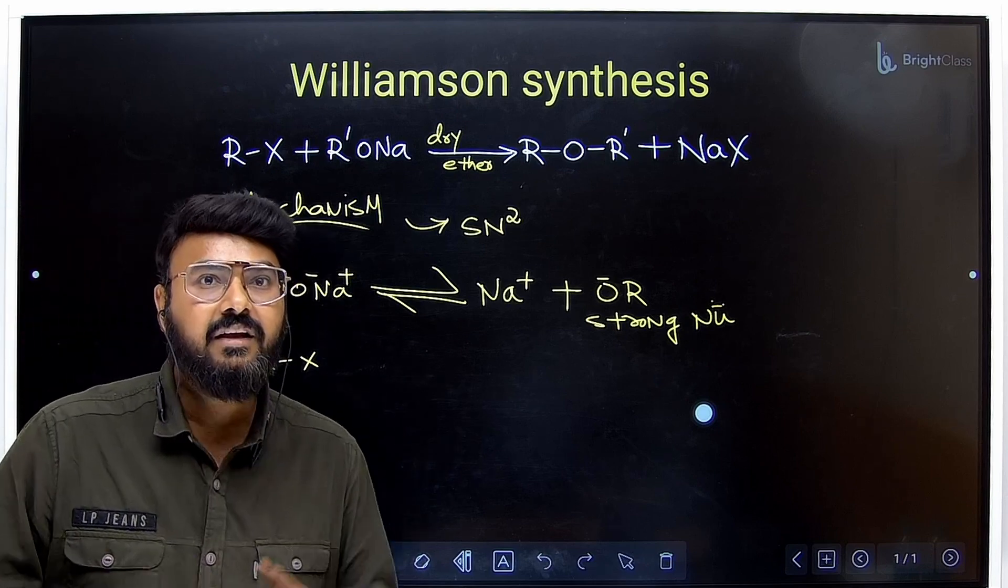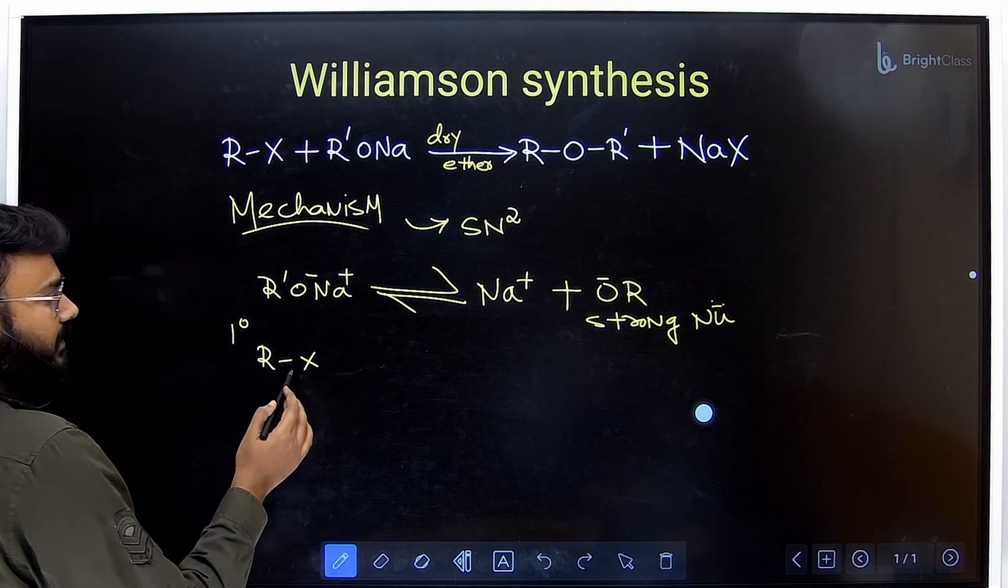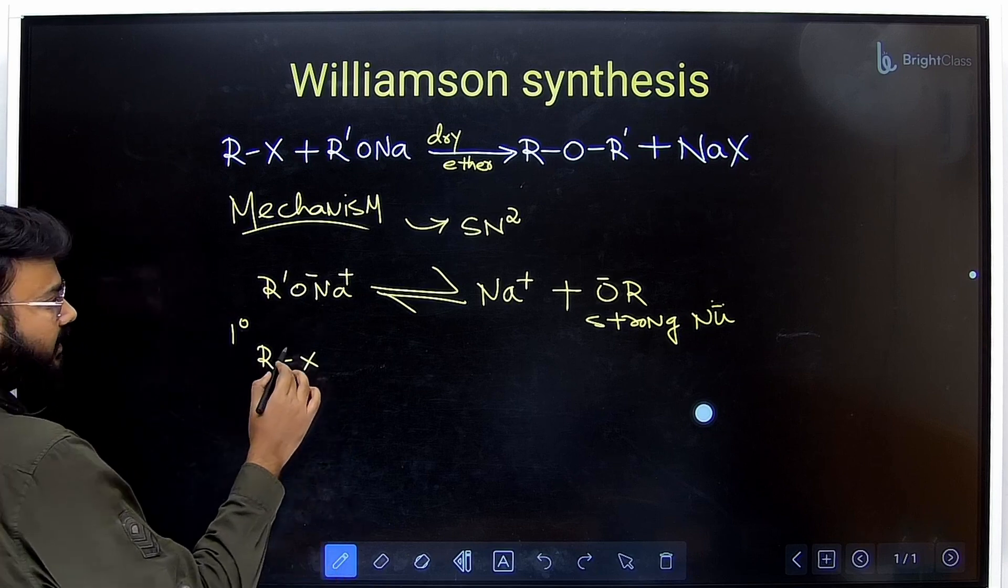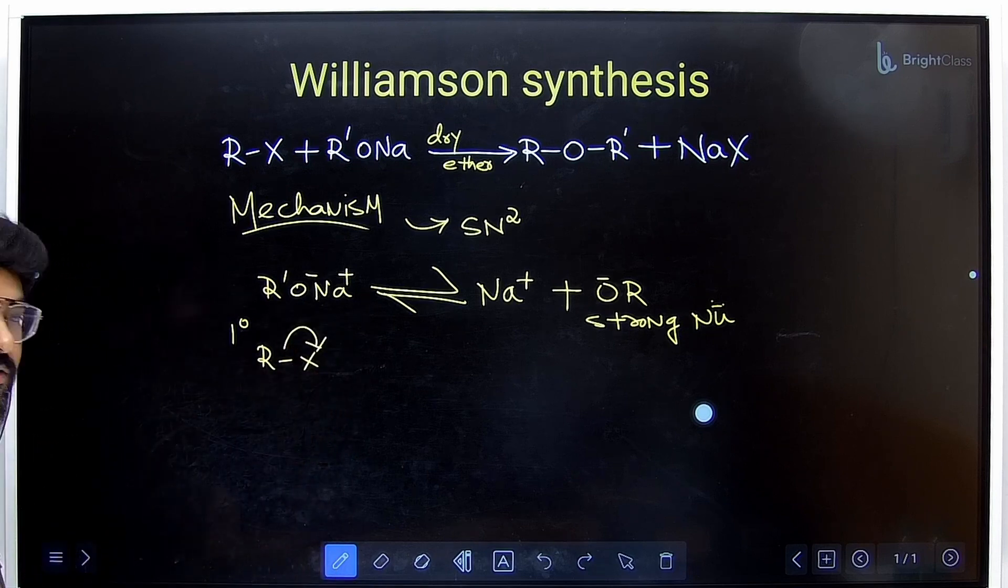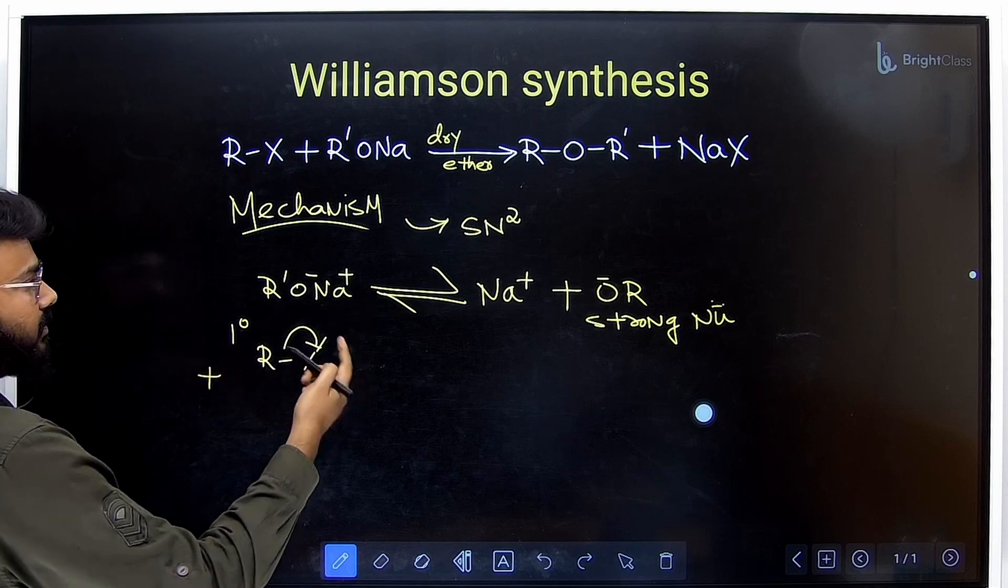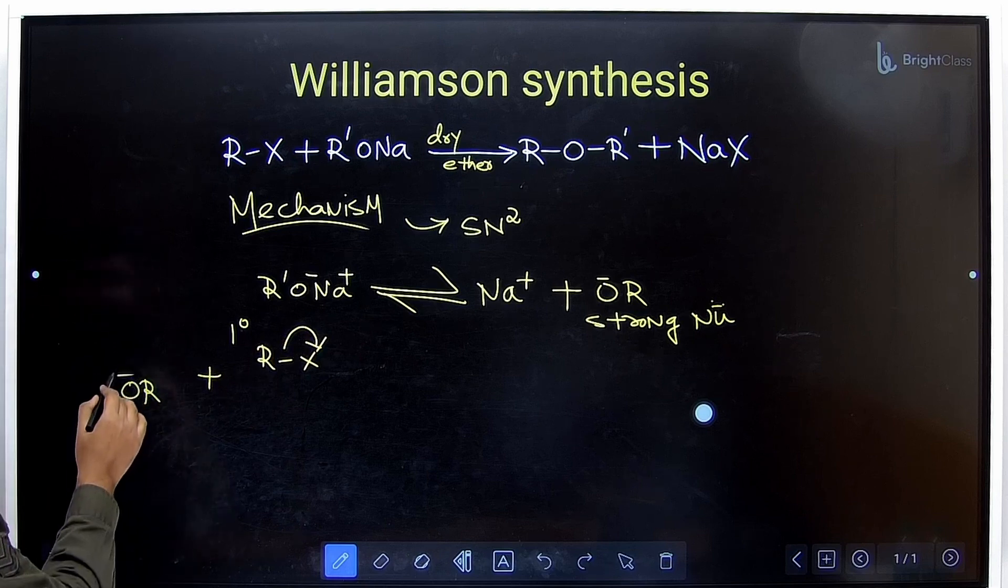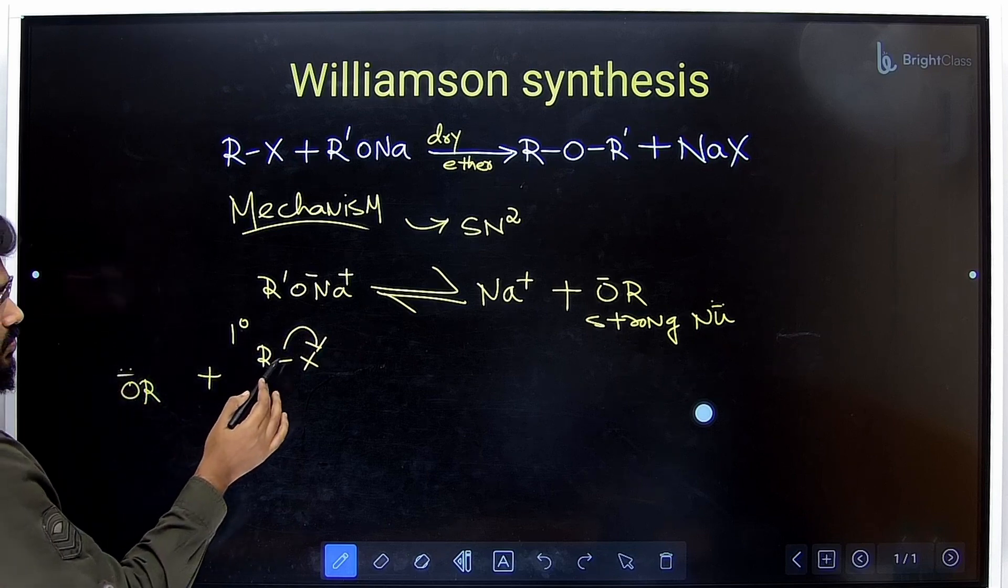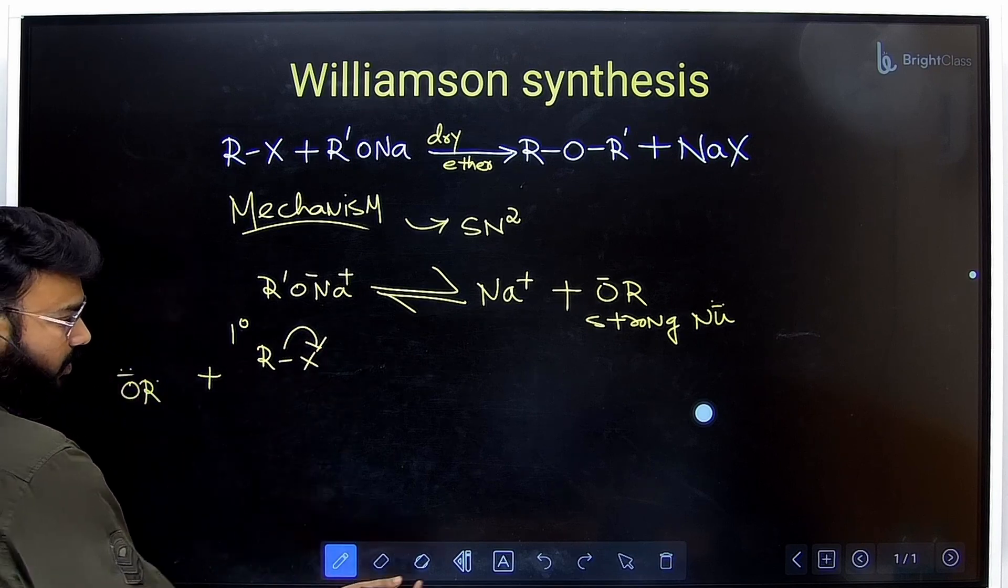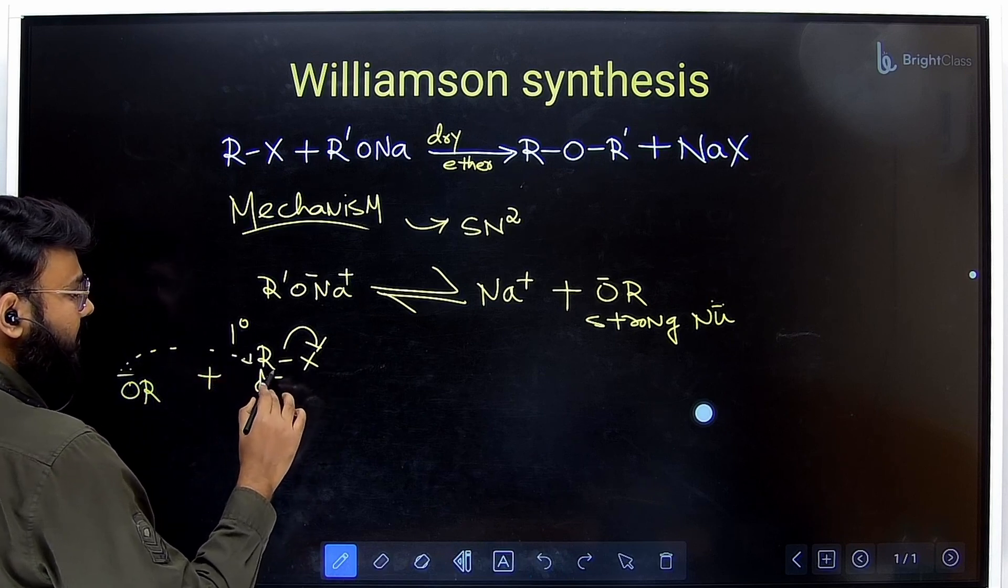So the condition for this reaction is the alkyl halide must be one degree because there should be minimum steric hindrance. It is important. Now what will happen? We will be seeing that the halogen will take up the electron, being more electronegative, there will be a cleavage of the bond under the influence of this alkoxide ion. Alkoxide ion is going to be our nucleophile.